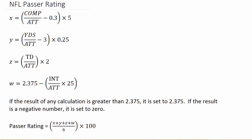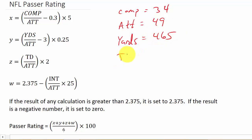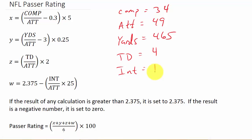Let's look at an example. Say we have a quarterback with 34 completions out of 49 attempts, 465 passing yards, 4 touchdowns, and 1 interception. Let's take these stats and calculate the passer rating.